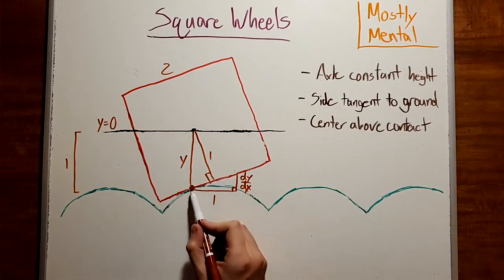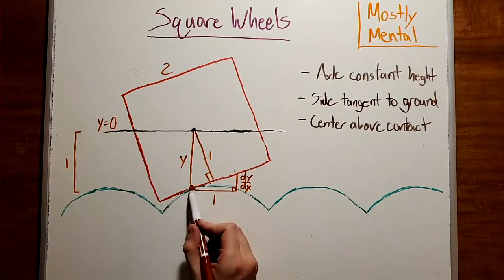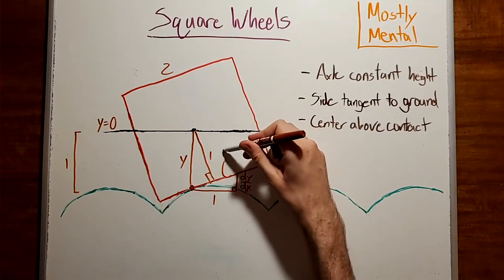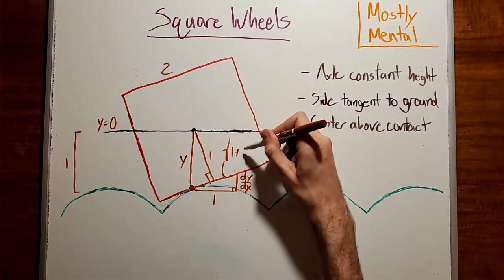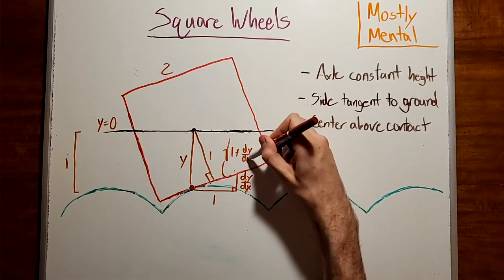And then by the Pythagorean theorem, this side here must have length square root of 1 plus dy dx squared.